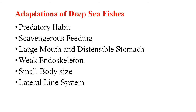Small body size is almost a universal character of deep sea animals, although gigantic forms have also been recorded. The lateral line system is also well developed in all deep sea fishes. This sense organ enables the deep sea animals to live successfully in the lightless environment.